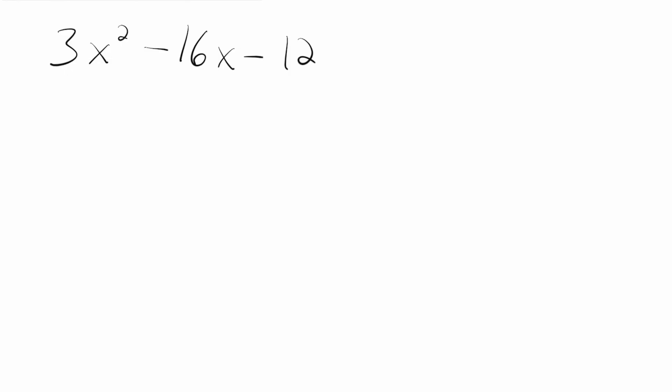Let's start with the problem 3x squared minus 16x minus 12. As usual we're going to get two sets of parentheses set up and we're going to put an x on the left side as usual. We're leaving a little bit of space in front of both of those x's and we'll talk about that later.